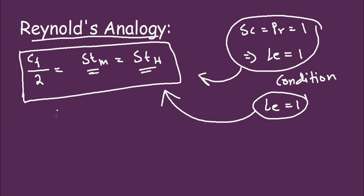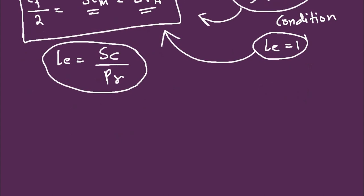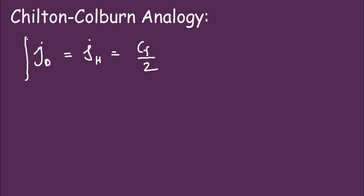The Lewis number is the ratio of Schmidt number to Prandtl number. Next, we discuss the Chilton-Colburn analogy. This analogy states that the Colburn factor for mass, j_D, equals the Colburn factor for heat, j_H, equals friction factor divided by 2.